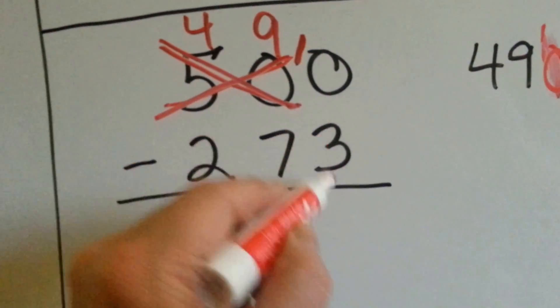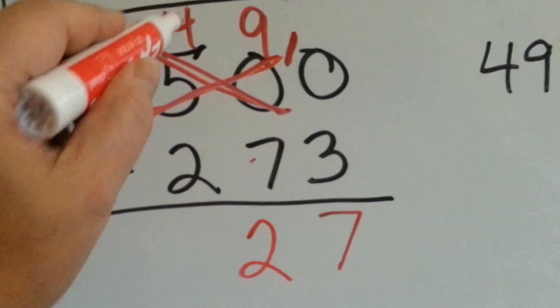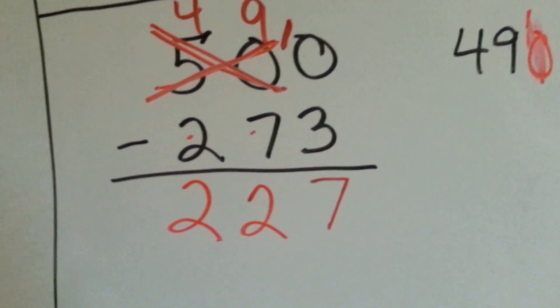Now you can say 10 take away 3 is 7, 9 take away 7 is 2, and 4 take away 2 is 2. Let's try it again, but with a bigger number.